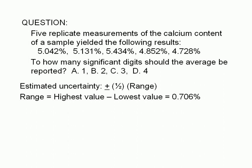In the case given here, the highest value is 5.434%, and the lowest value is 4.728%. 5.434 minus 4.728 is equal to 0.706. Therefore, the range is 0.706%.